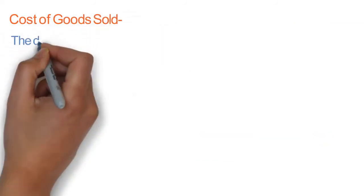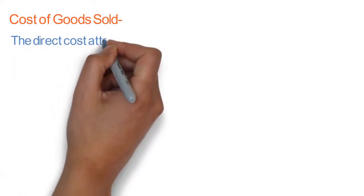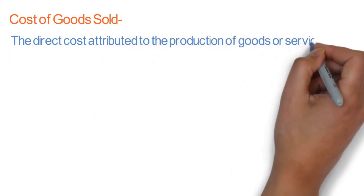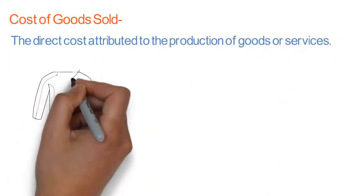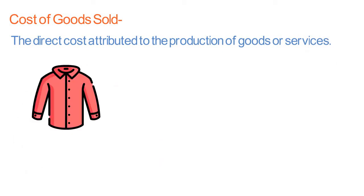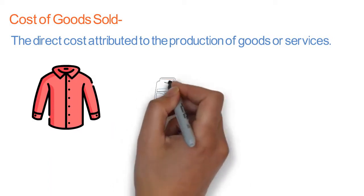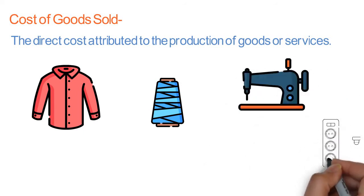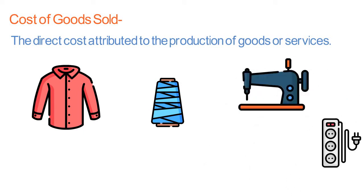Now, what is cost of goods sold? It is the direct cost attributed to the production of goods or services. For example, you visit a retail outlet to purchase a shirt. The shirt is made up of fabric, buttons, threads, a sewing machine, and even electricity and labor have been used while making the shirt.